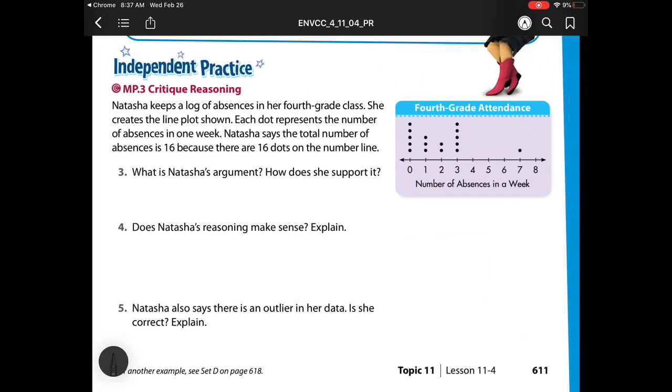Natasha keeps a log of absences in her fourth-grade class. She creates the line plot shown over here. Each dot represents the number of absences in one week. Natasha says that the total of absences is 16 because there are 16 dots on a number line. So what is Natasha's argument, and how does she support it?